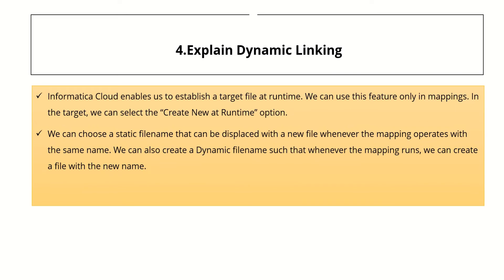The fourth question is explain dynamic linking. Informatica Cloud enables us to establish a target file at runtime. We can use this feature only in mappings. In the target, we can select the 'create new at runtime' option, where we can choose a static file name that gets replaced with a new file whenever the mapping runs with the same name. We can also create a dynamic file name such that whenever the mapping runs, a file is created with a new name.